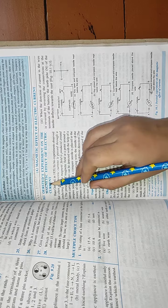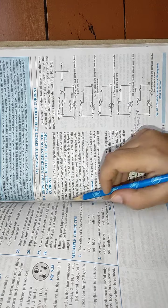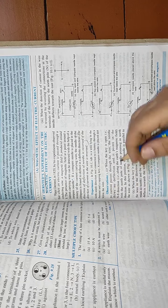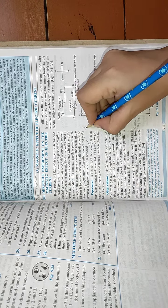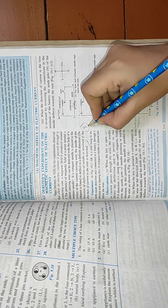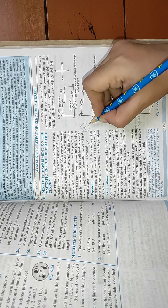Oersted's experiment on the magnetic effect of electric current. Basically, Hans Oersted was the scientist who discovered that whenever there is electric current I, then because of that current, a magnetic field is produced.